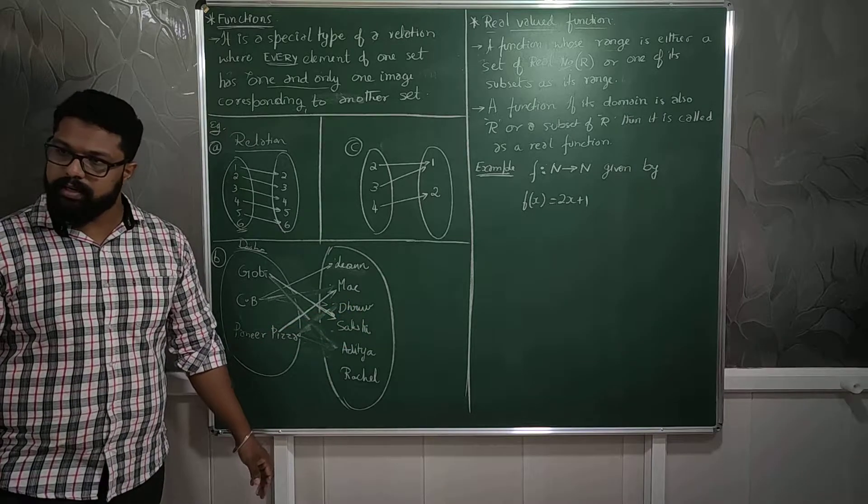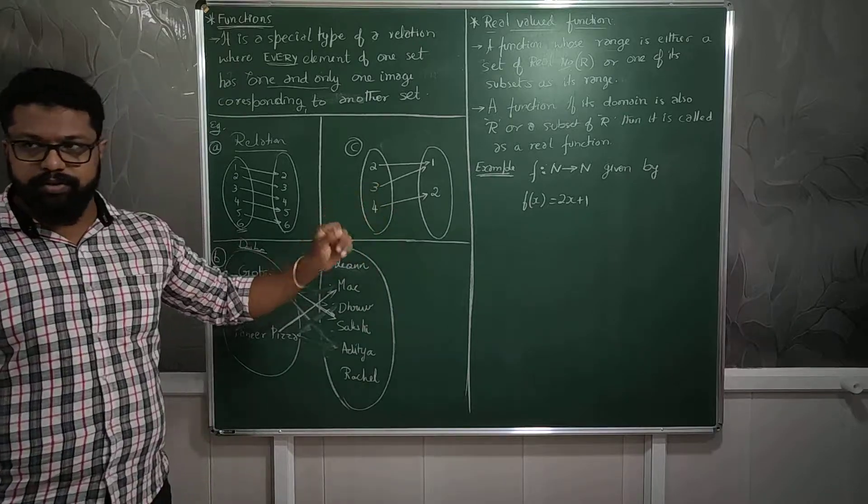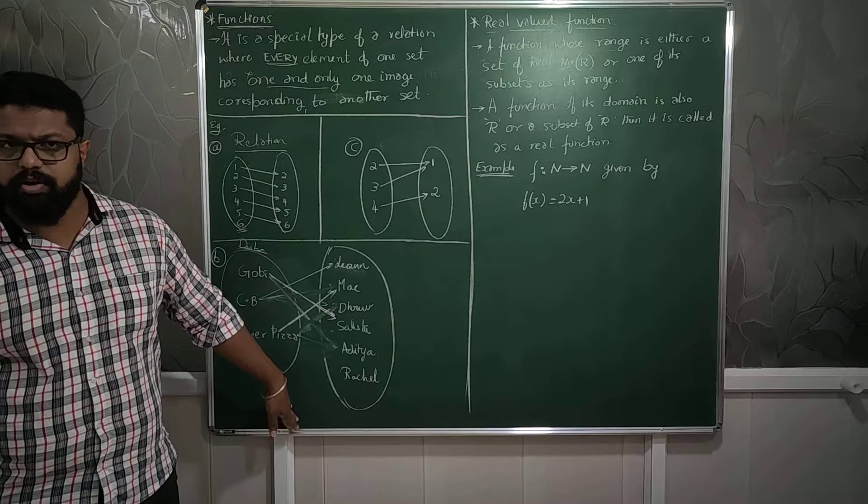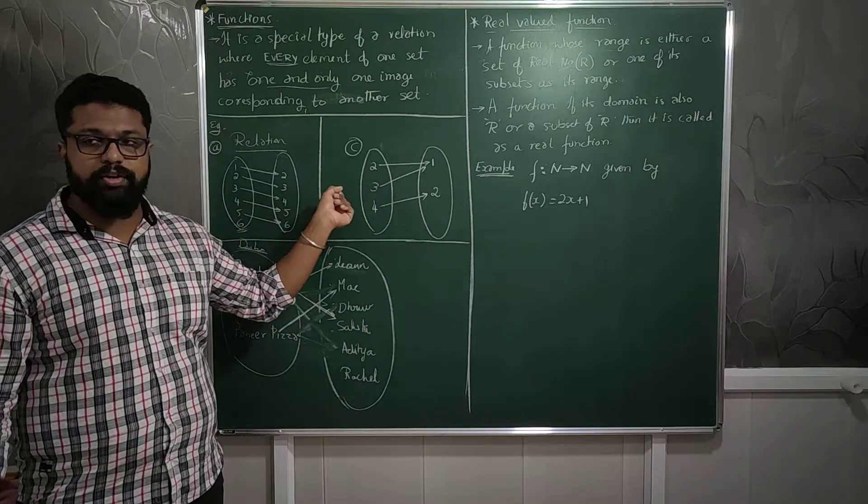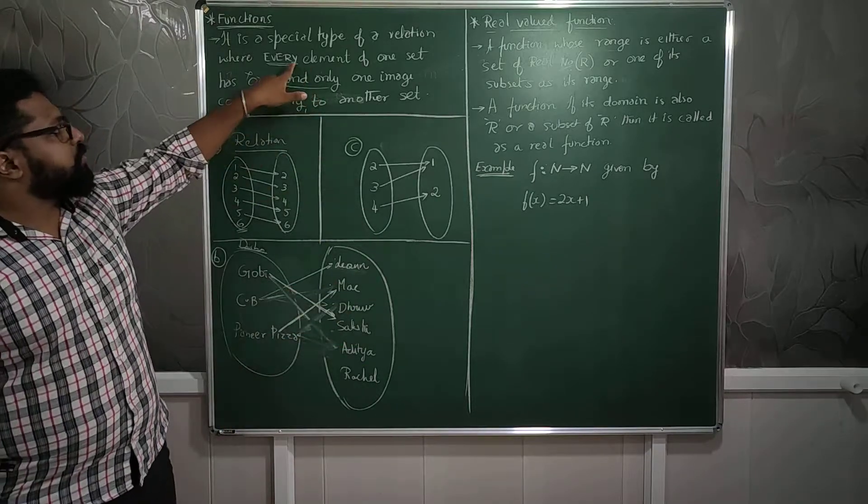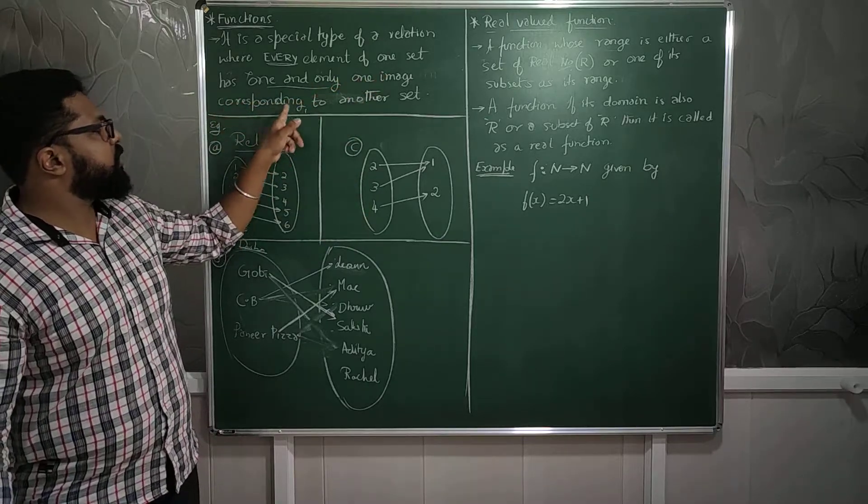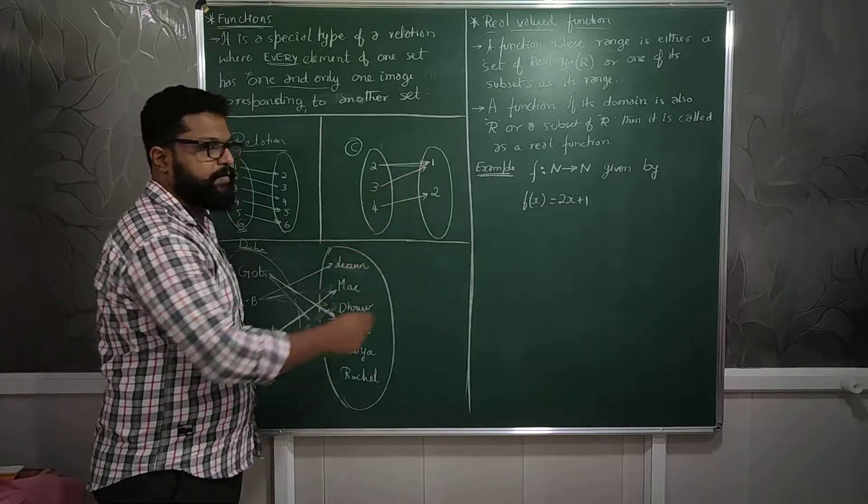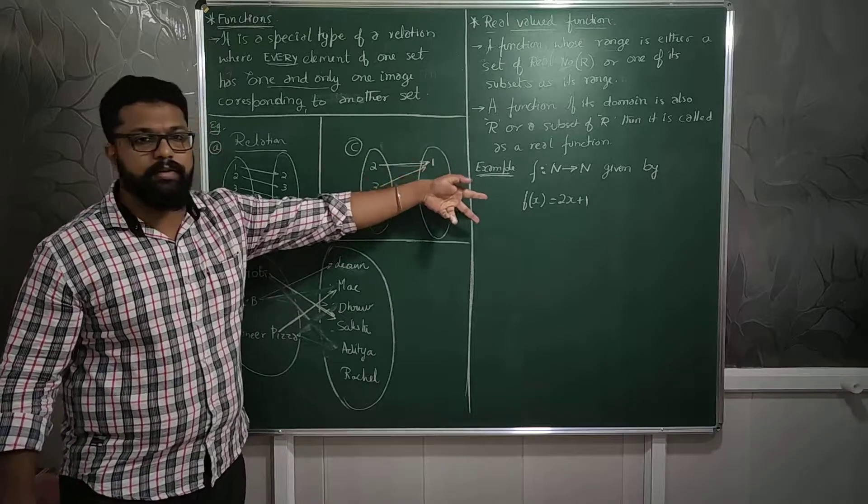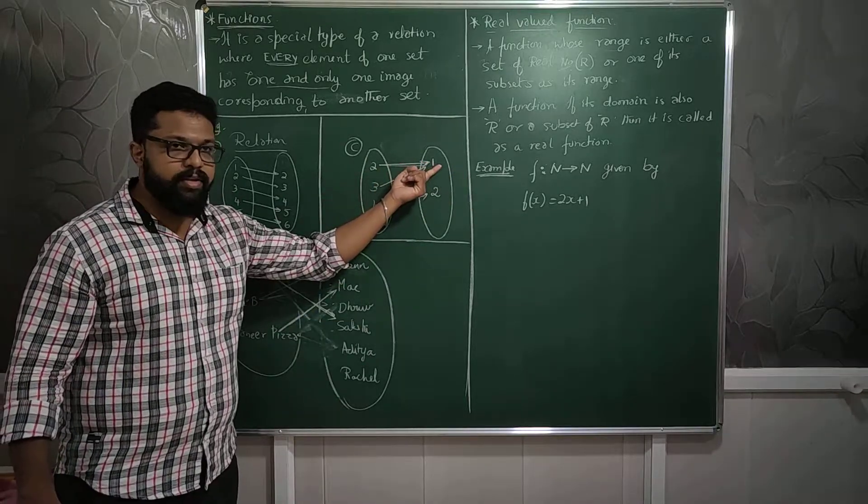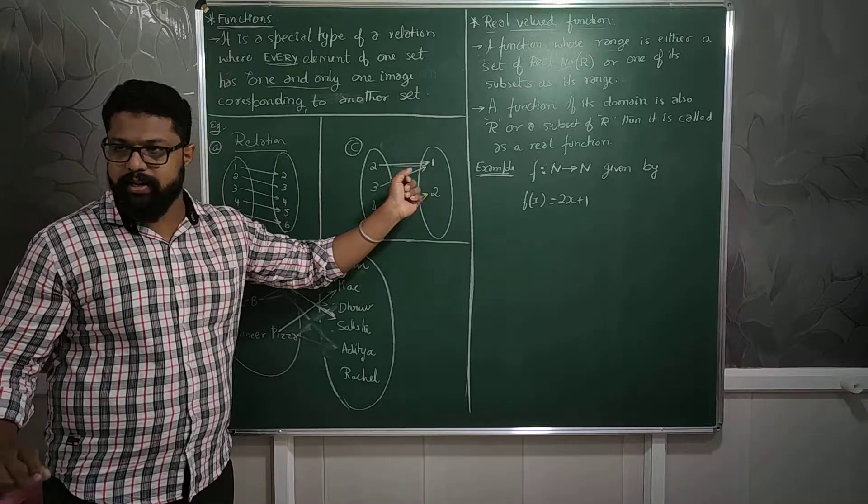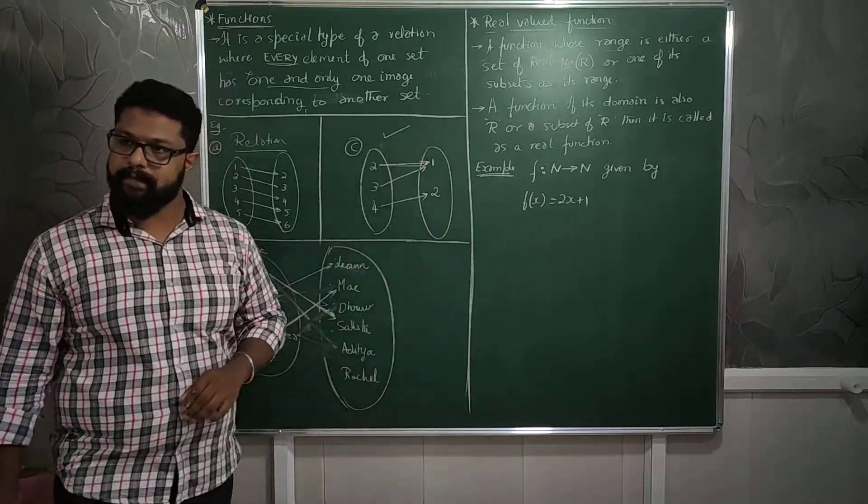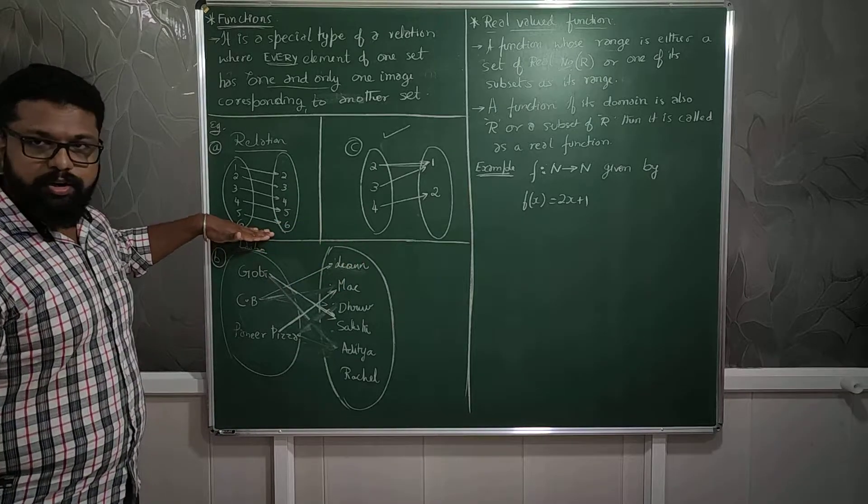Check this one. Whether this is a function or not. Every element of one set should have one and only one image. Two is having an image of one, only one image, perfect. Three is also having one image. It's not like three is going and falling on two. It is falling into the same image, but it is having only one image. Two and three have the same image, that's all. One and only one image, yes, it is satisfying both conditions. So this is a function. This is just a relation, not a function. This is a function which I created. Previously it was just a relation.